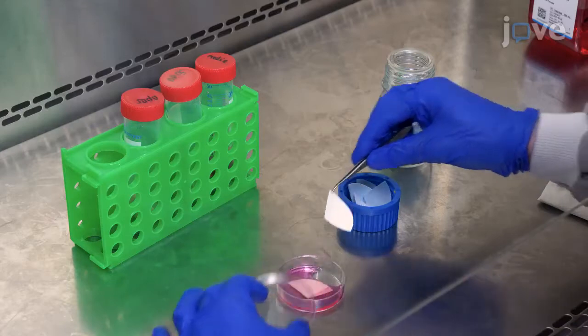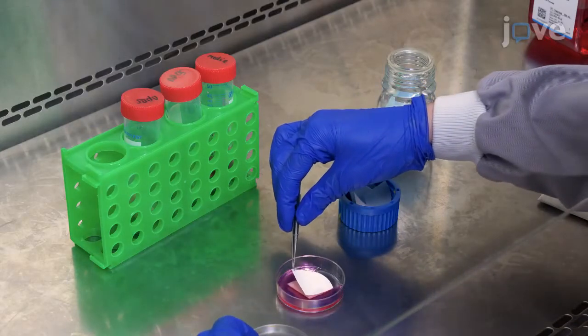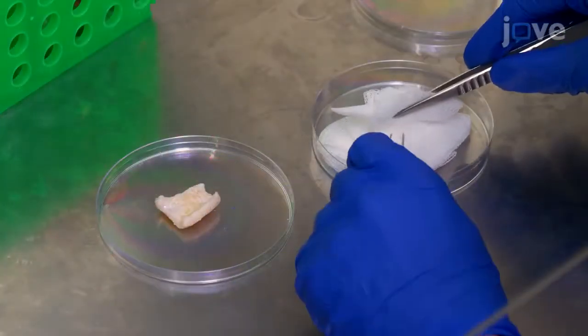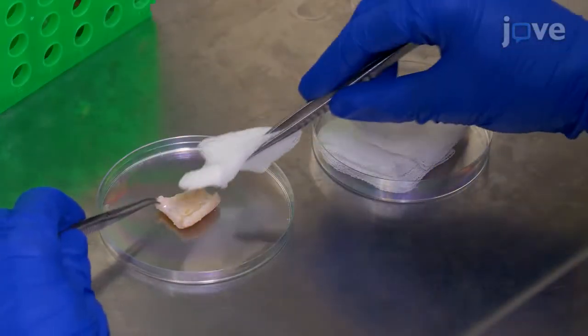Then place a sterile nylon filter membrane onto the absorbent pad stack and dry the dermal side of the skin on sterile gauze in a 90 millimeter petri dish to remove residual DPBS.